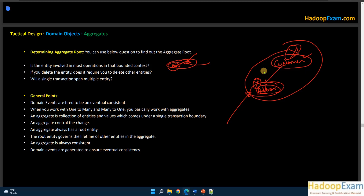An aggregate is a collection of entities and values within a single transaction boundary. The aggregate controls all changes — every change must go through the aggregate root. The aggregate always has a root entity, and the root entity governs the lifetime of the other entities. If you delete the Customer, you must also delete the Address and Phone. Domain events are generated to ensure eventual consistency — once an address is updated, a new event is generated and the system becomes eventually consistent.